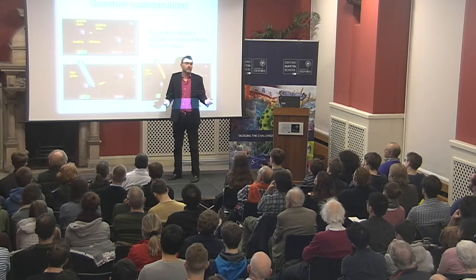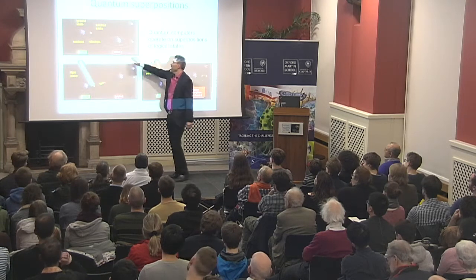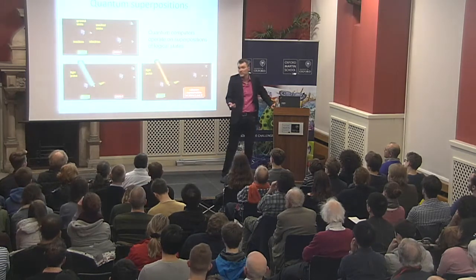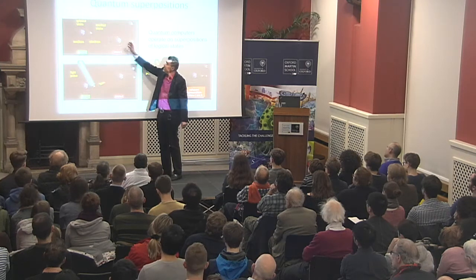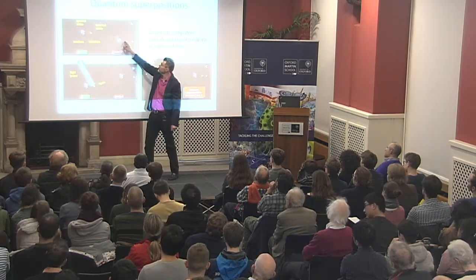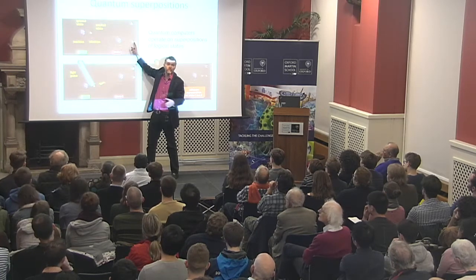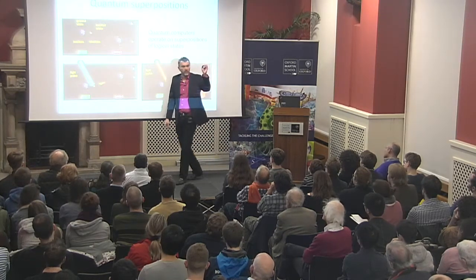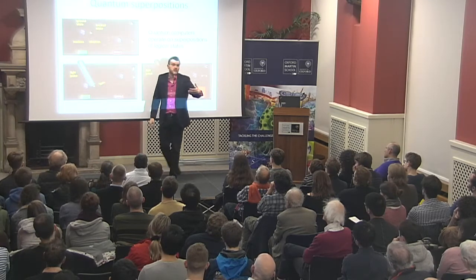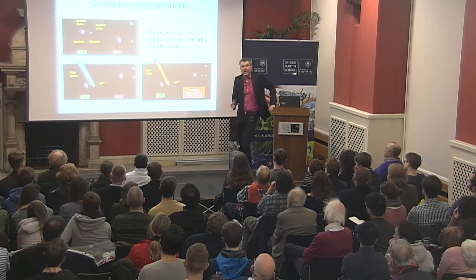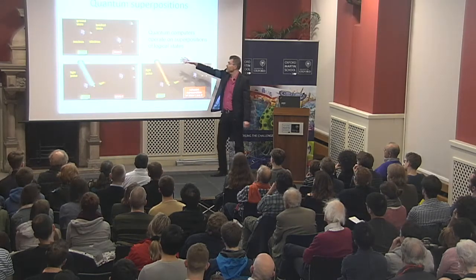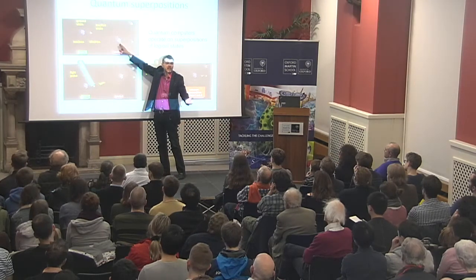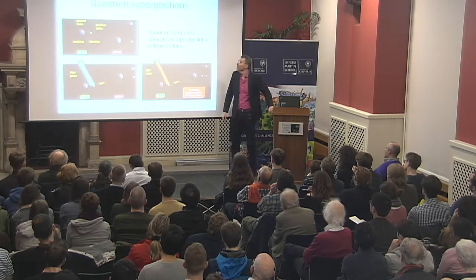All you need to do quantum mechanically is move this electron from being close to the nucleus to being further away, deterministically. David Lucas in physics here holds the world record for doing this efficiently — he can achieve this transfer with 99.9999% accuracy. We're talking about the size of a billionth of a meter, yet you can really control it to a very high degree of accuracy.